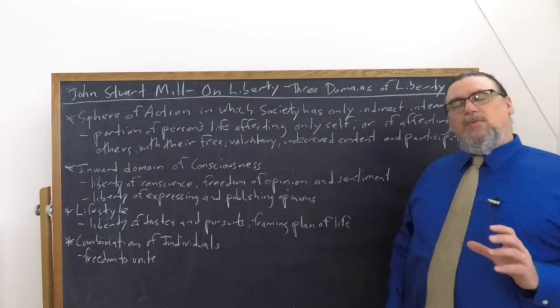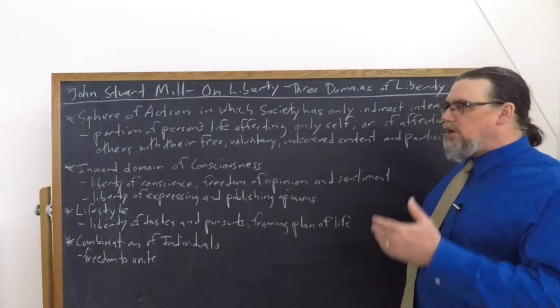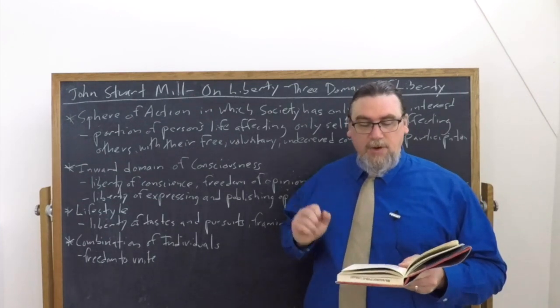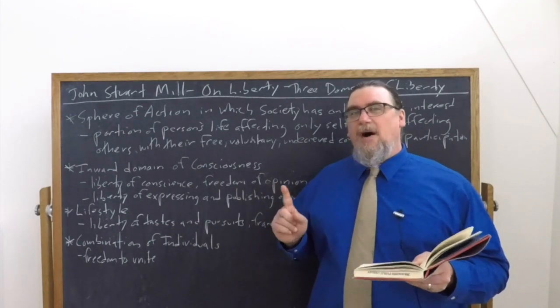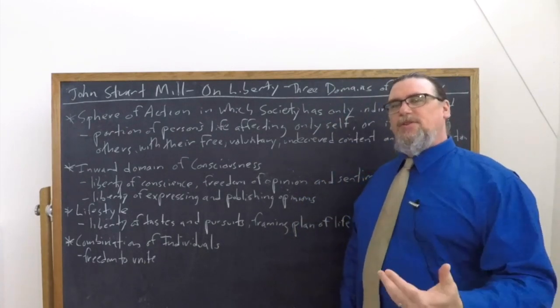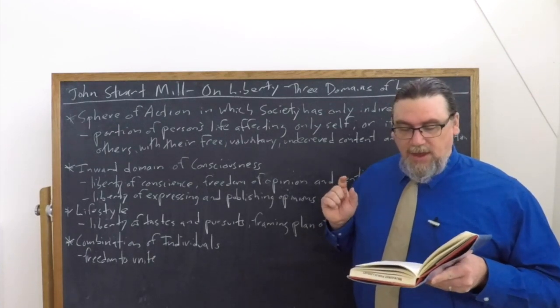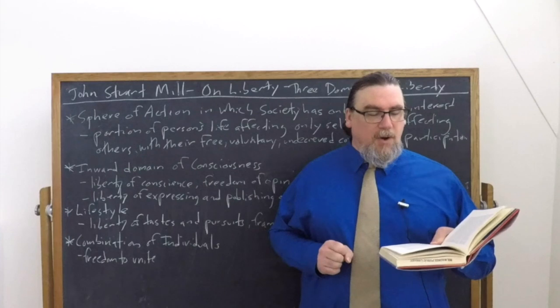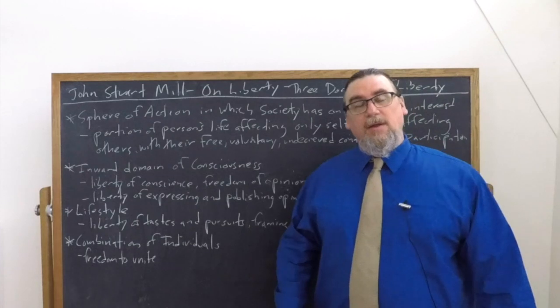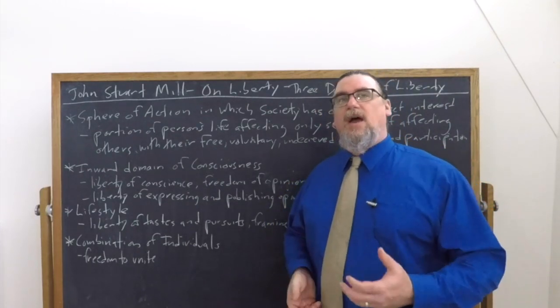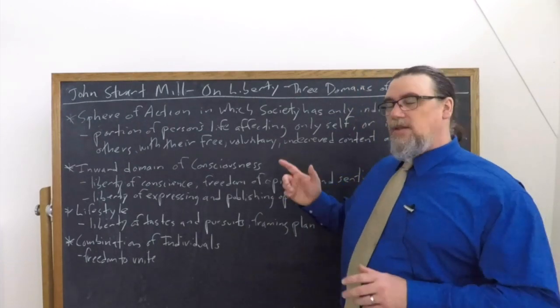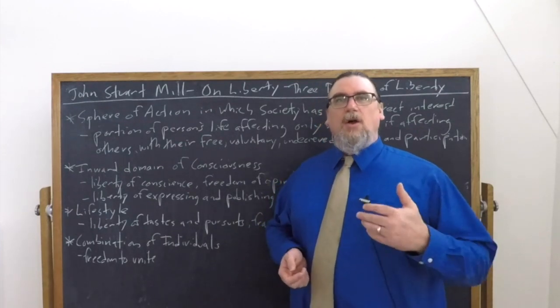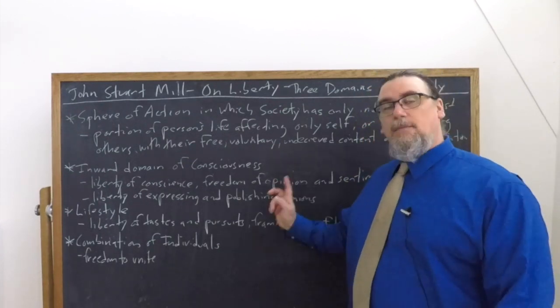Then he says that in this inward domain of consciousness, we also should include liberty of something that seems to go outside of that domain and get into the rest of the world. He says that the liberty of expressing and publishing opinions may seem to fall under a different principle. Why would it fall under a different principle? Because it seems to be external. But according to Mill, being almost as much importance as the liberty of thought itself and resting in great part on the same reasons, it is practically inseparable from it. So our freedom of expression, which is really the thing that I think people go to this book for the most, falls within this first domain.